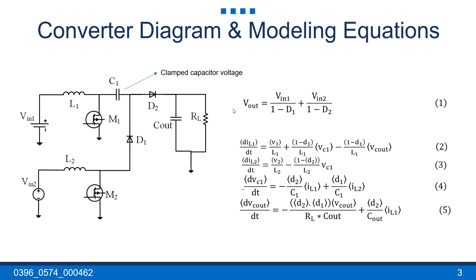Equation 1 shows the overall steady state ideal input to output transfer function. This is basically the sum of both voltages as boosted from the two separate DC input sources, VN1 and VN2. Vout is the converter's output voltage. D1 is the average duty cycle of M1 and D2 is the average duty cycle of M2.